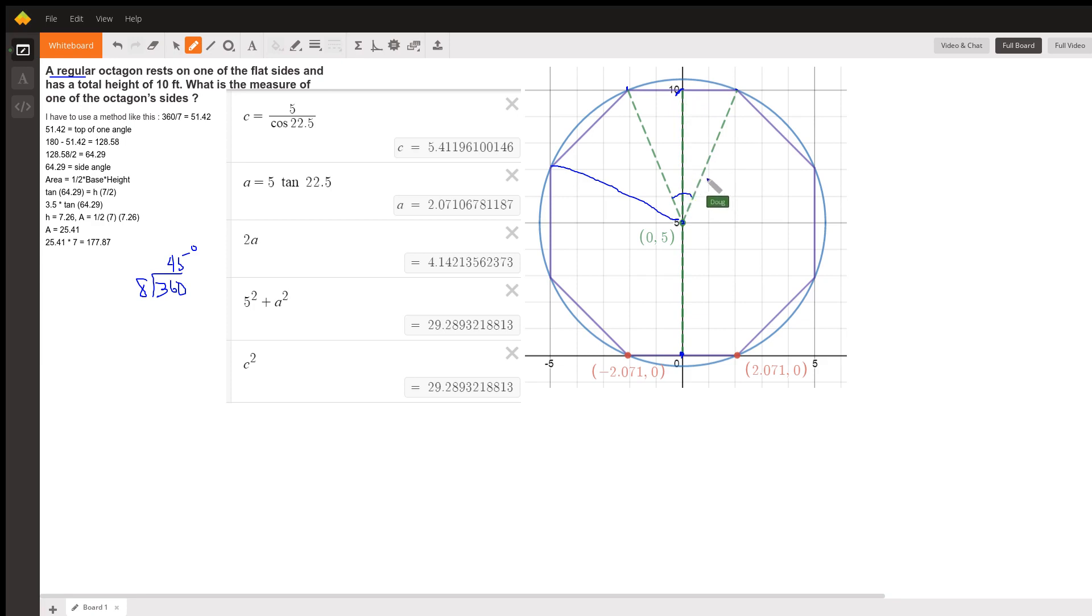If I call this distance right here a and this distance c, and we know that this distance is 5, I can use some trigonometry to find the measure of both a and c.